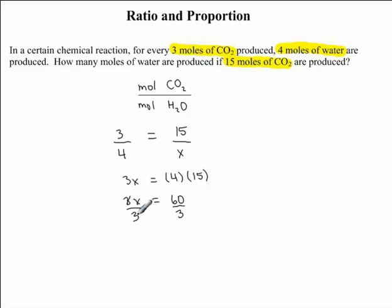3 divided by 3 cancel out, or divide out to 1, so we're left with X. It's equal to 60 divided by 3, which is 20.